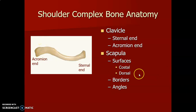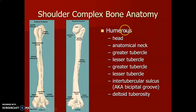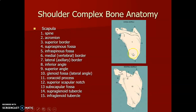This is the scapula, and you need to appreciate its parts: the superior angle, inferior angle, infraspinous fossa, supraspinous fossa. This is the spine, acromion, the coracoid process, the glenoid cavity, and the supraglenoid and infraglenoid tubercle.